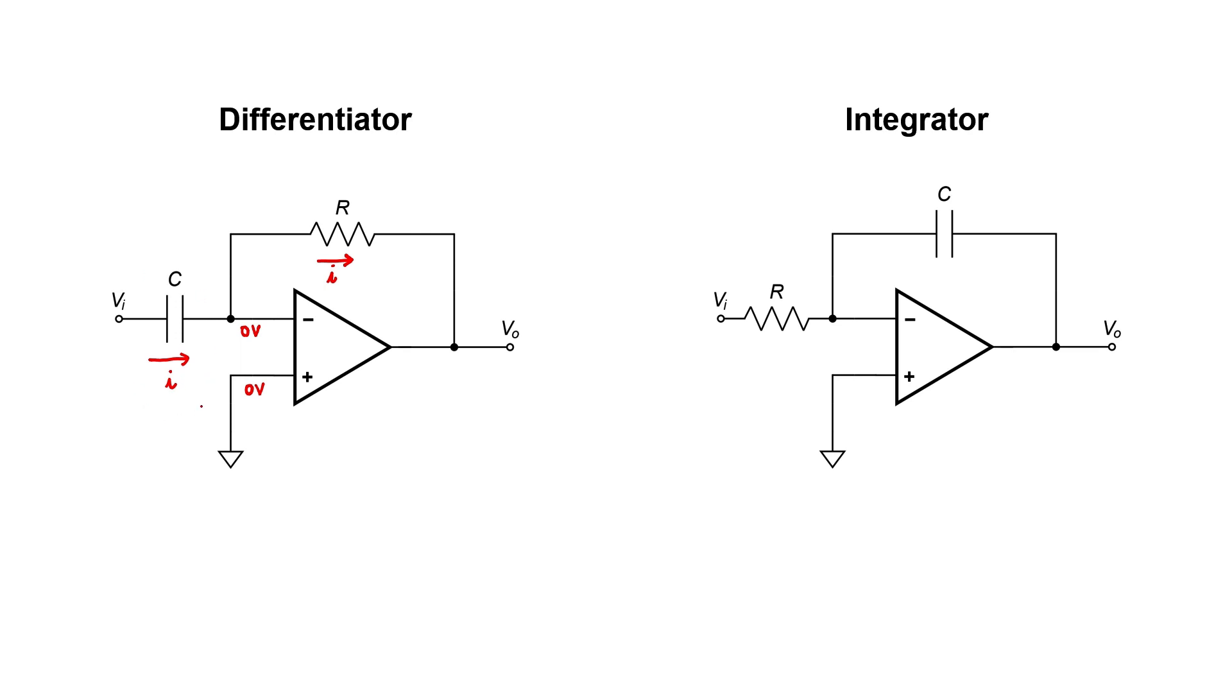The first current, going through this capacitor, is given by C dV over dT, and V here is just the voltage at the input. That same current passes through the resistor. Ohm's law gives us minus VO over R. It's negative because the arrow points from zero towards positive voltage. If I solve this equation for the output voltage, I find that the output voltage is just a constant times a differentiation of the input voltage.